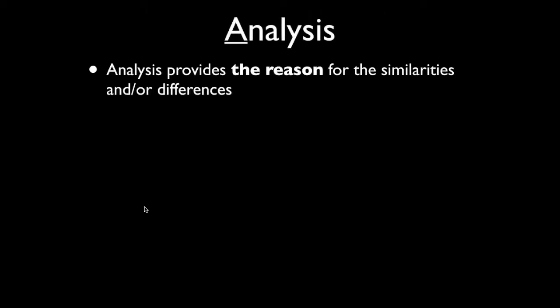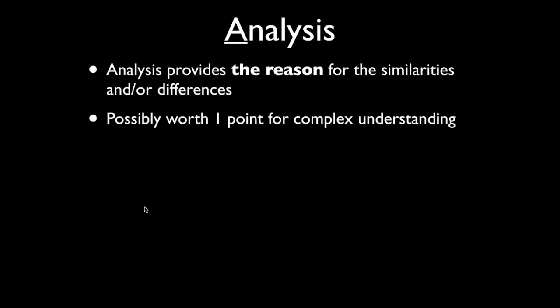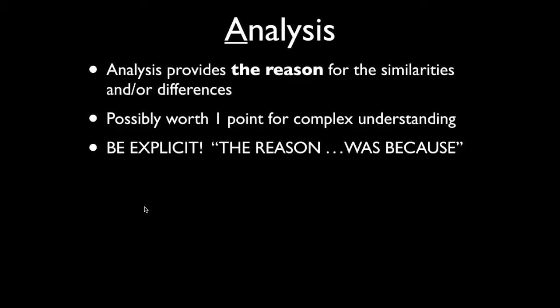Analysis is what comes at the conclusion of each body paragraph if you can include it and if you have the time. What analysis does is provide the reason for the similarities and/or differences. Analysis answers the question 'why,' while evidence answers 'who, what, when, where, how.' There's no specific part of the rubric dedicated to analysis, but it can potentially be worth one point if you do it really well — that's one of the ways you could potentially score the unicorn point for complex understanding.